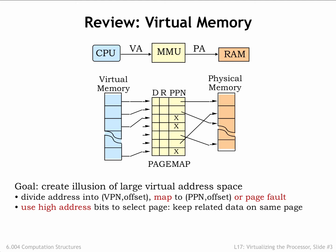In the actual implementation, the page map is usually organized into multiple levels, which permits us to have resident only the portion of the page map we're actively using. And to avoid the cost of accessing the page map on each address translation, we use a cache called the translation look-aside buffer to remember the results of recent VPN-to-PPN translations.